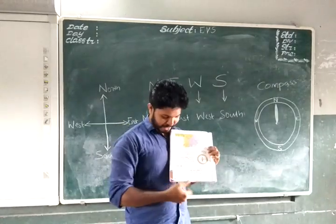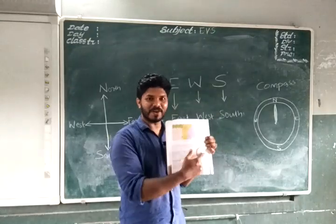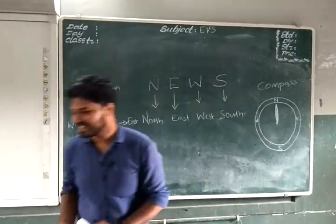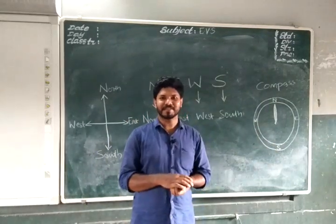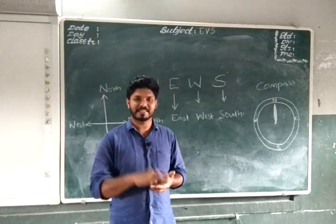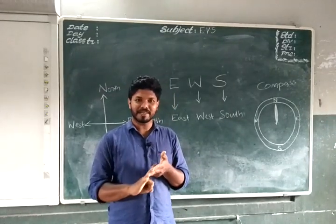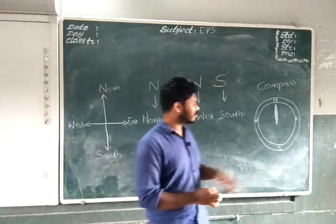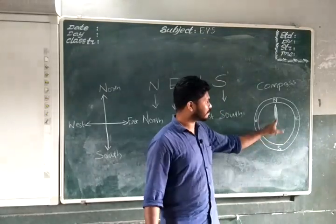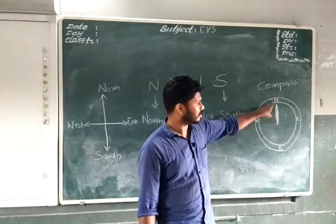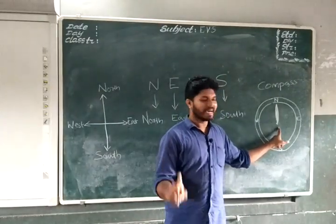You can see the compass on page number 192 in your textbook. It looks like a watch or clock, isn't it? Our watch has more than one needle — at least three: a second hand, an hour hand, and a minute hand. But the compass has only one needle.